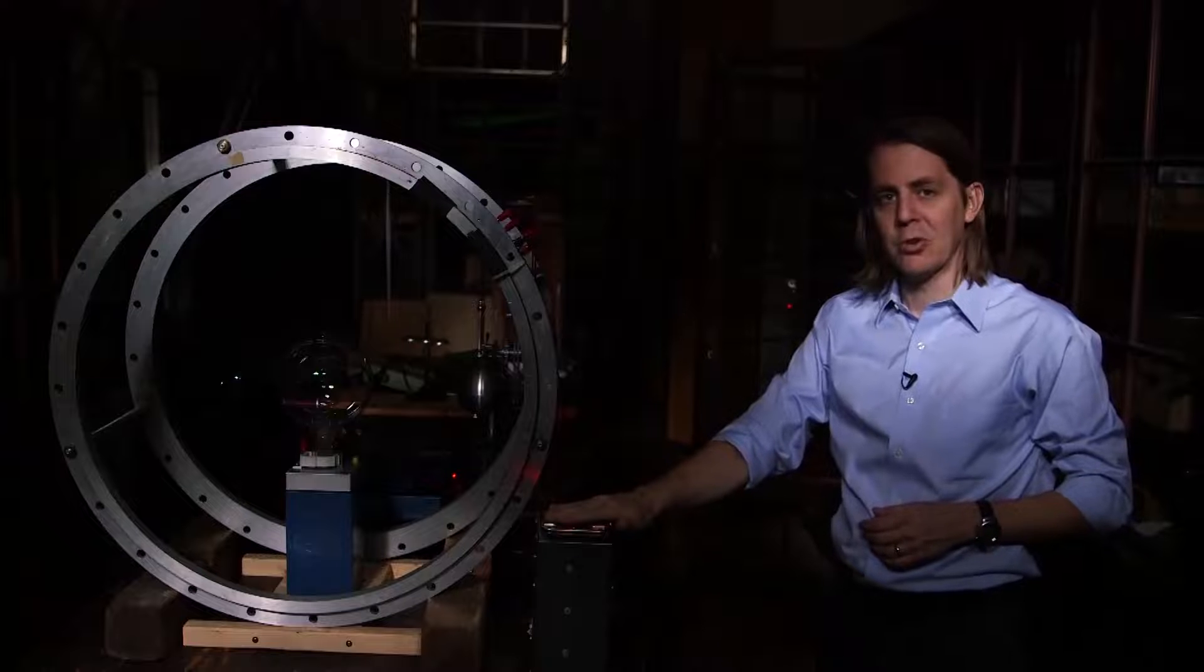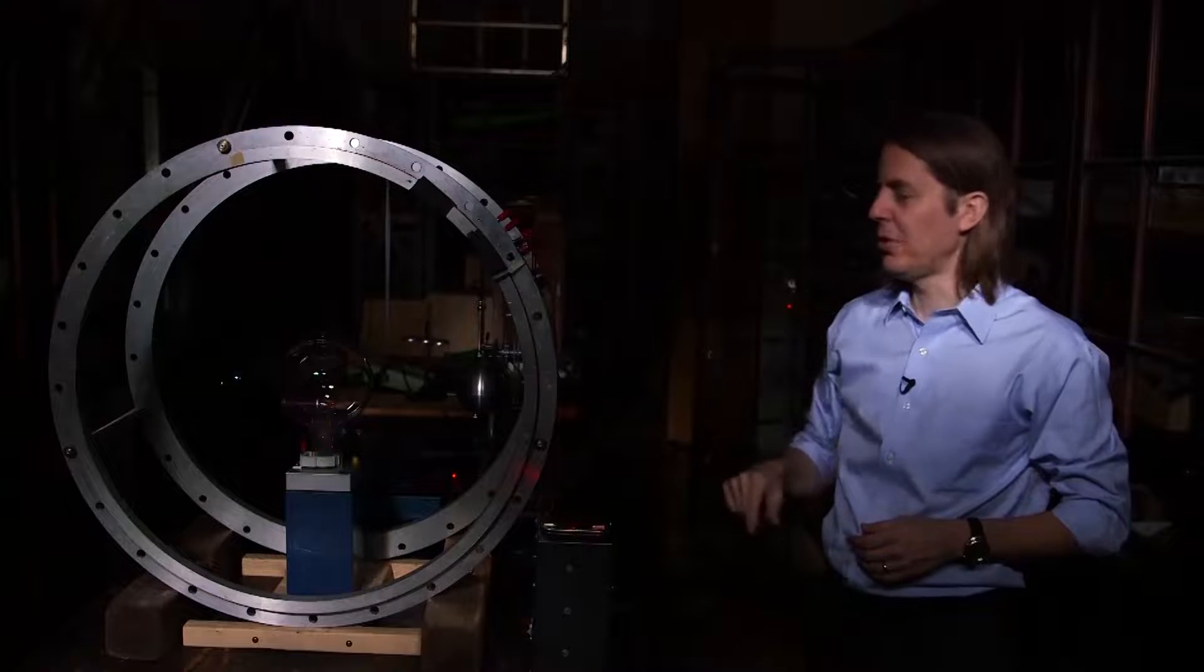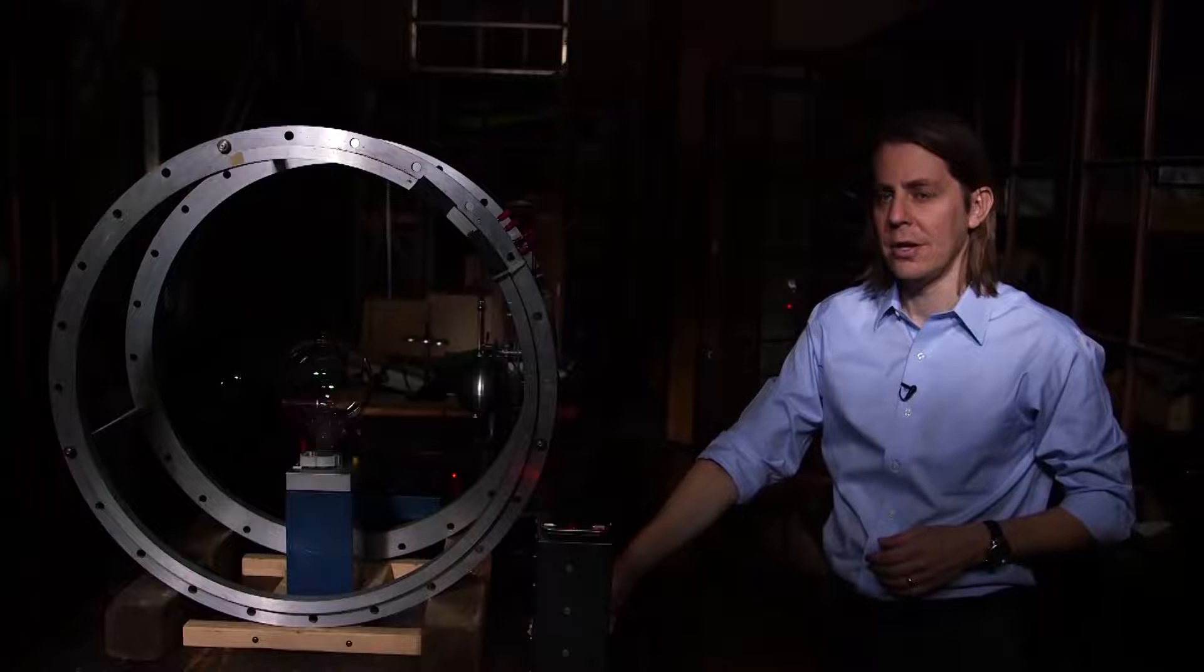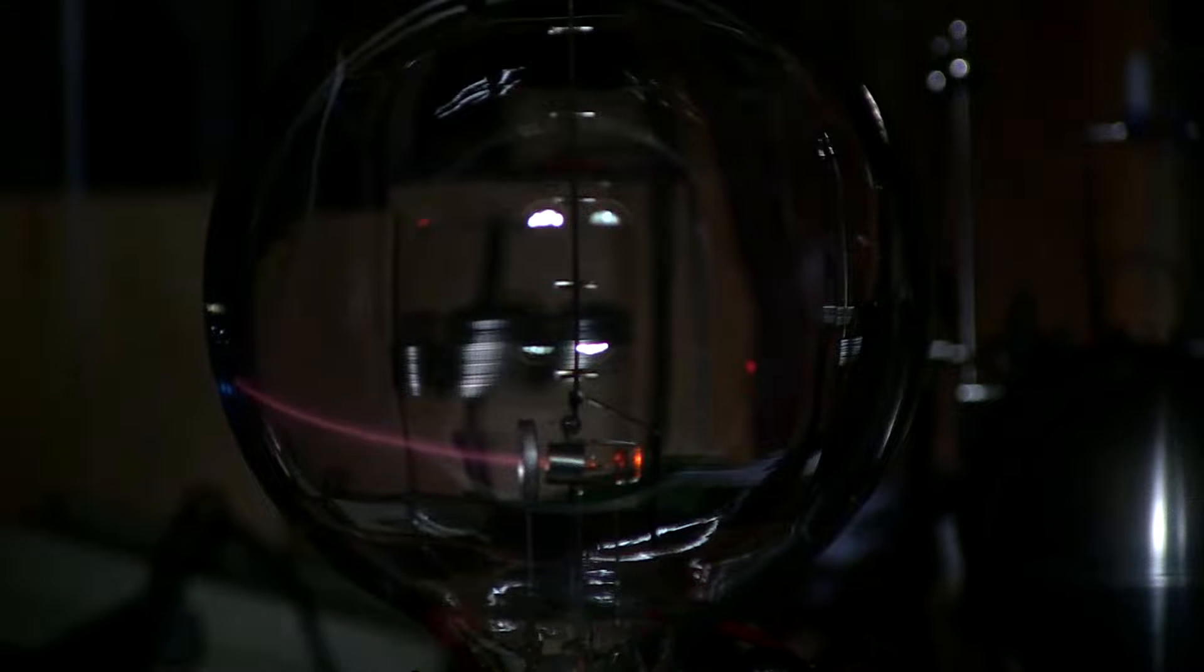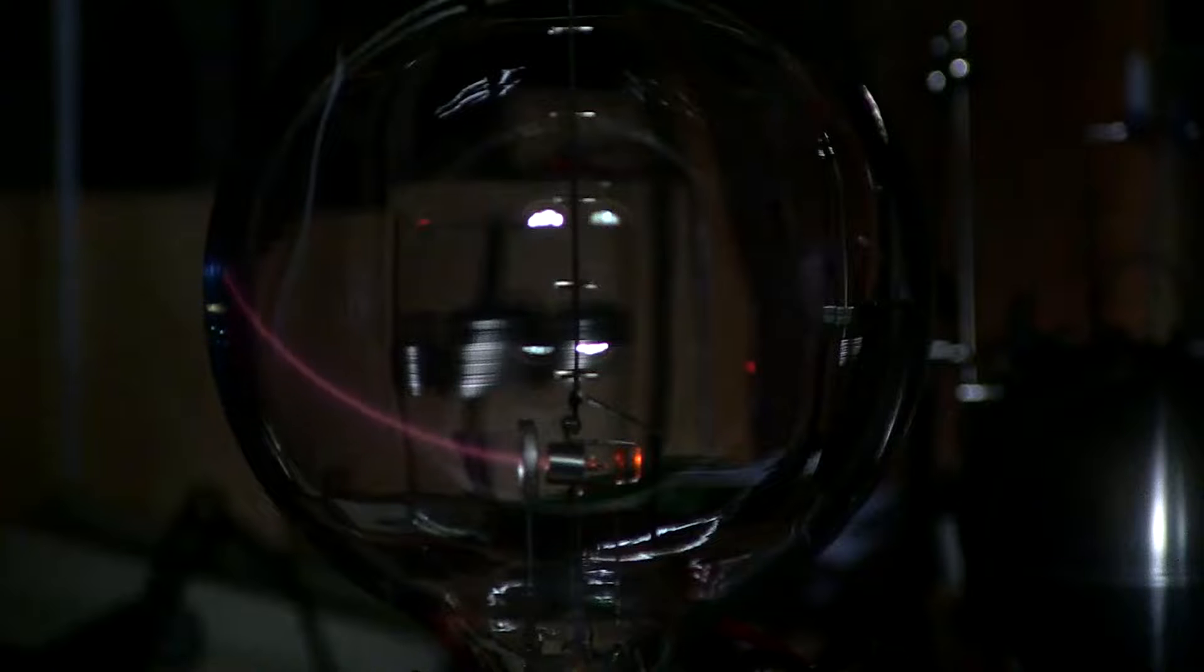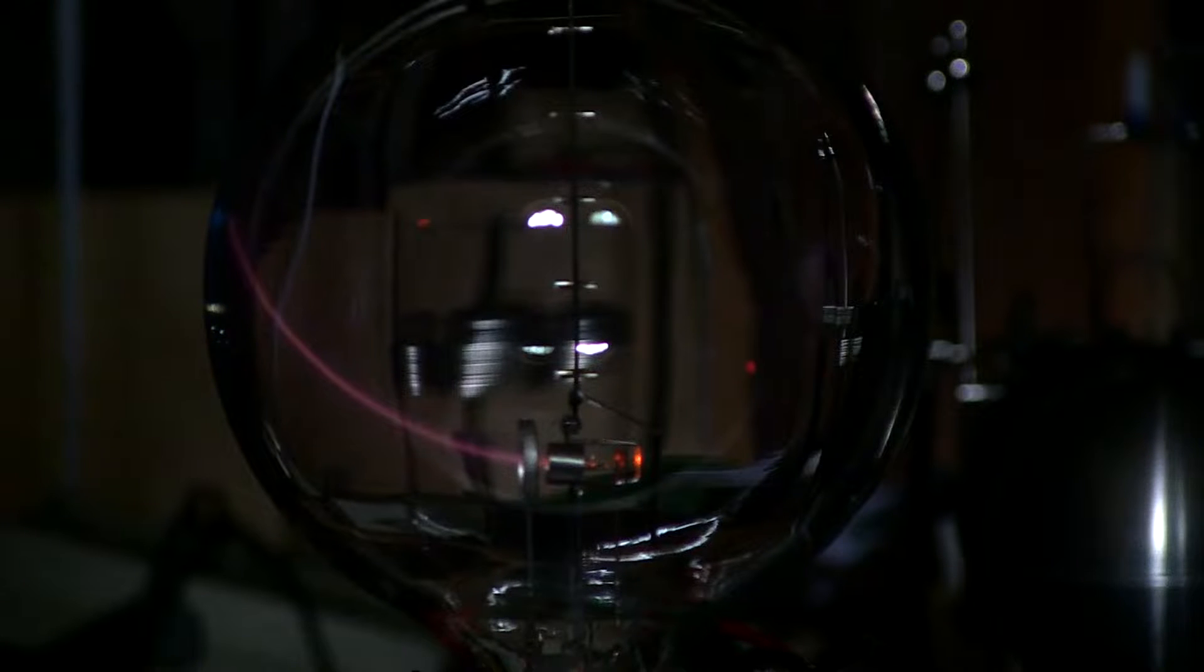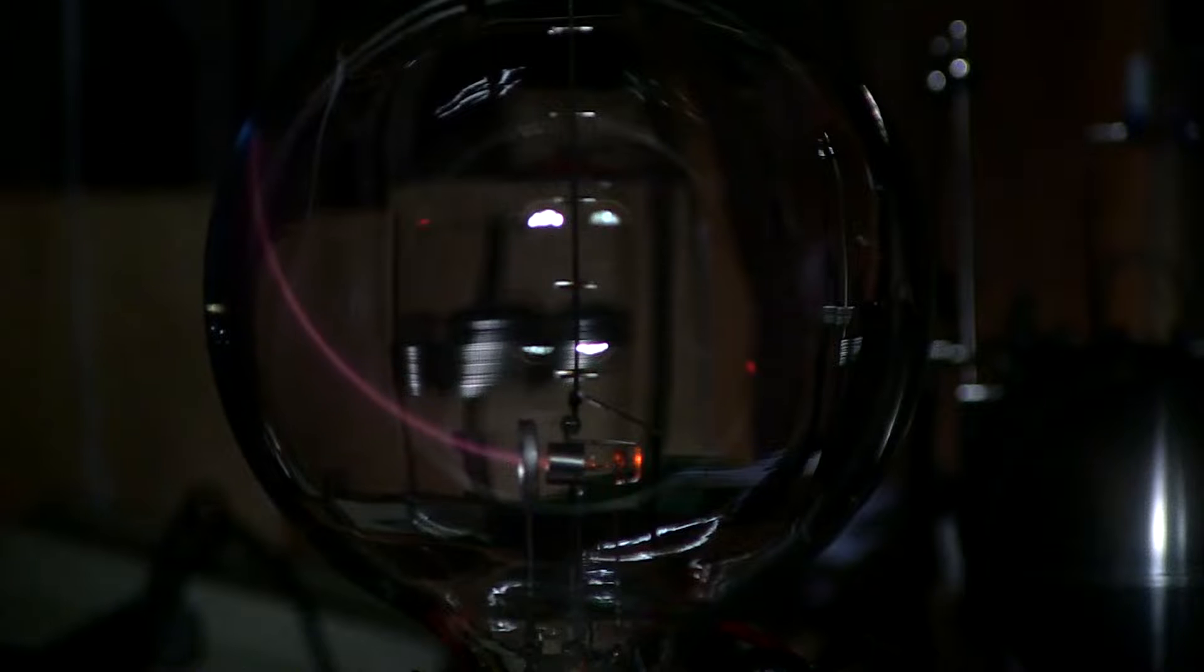So this power supply is going to increase the current in these coils and we'll see what pattern the electron beam takes. So here we're going to start turning it up and you can see it's starting to curve more and more and right now looks like it wants to make a circle but the radius is too big. It doesn't fit in the bulb.